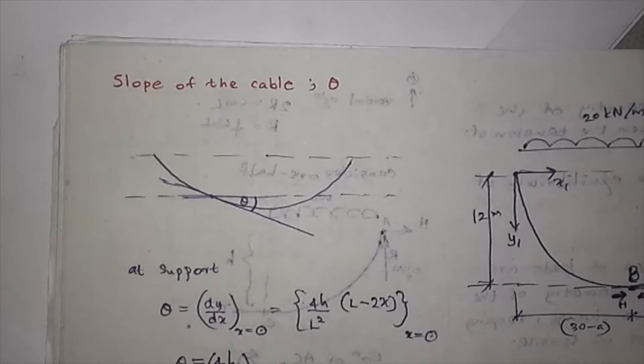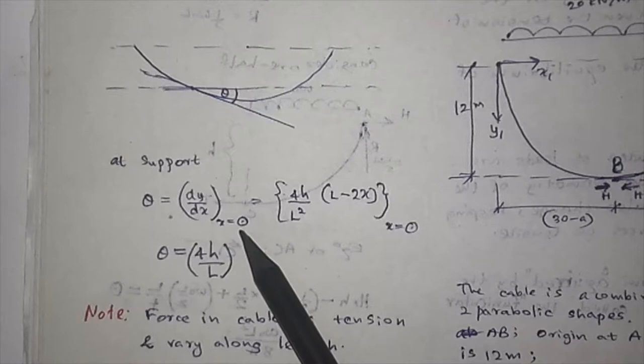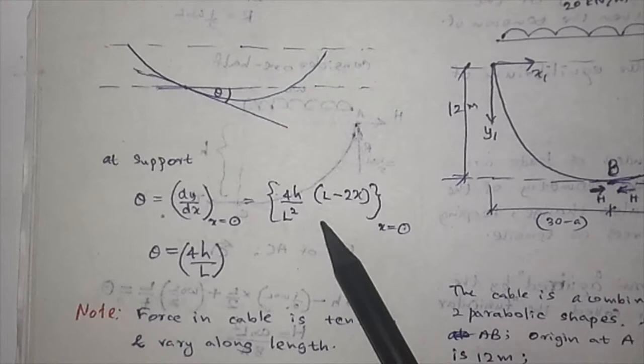When the slope of cable is theta, consider at the supports theta is dy/dx when X equals 0. You have the equation, you can take dy/dx by differentiation and substitute X equals 0. Then you can take the value of theta as 4H over L. So you can determine the value for theta, the angle of the cable.